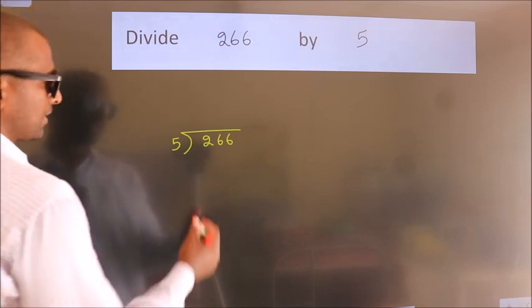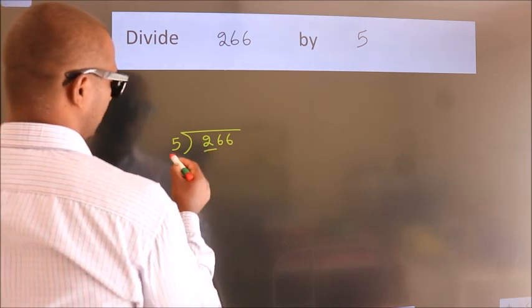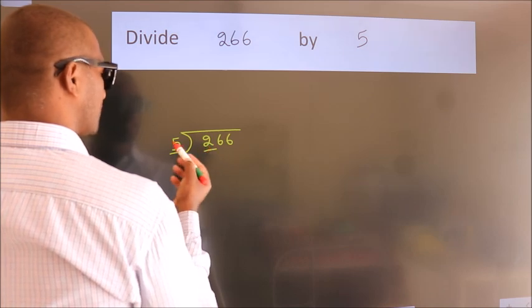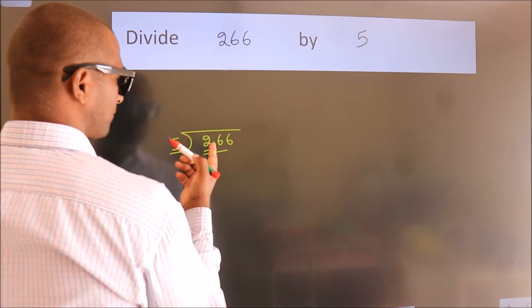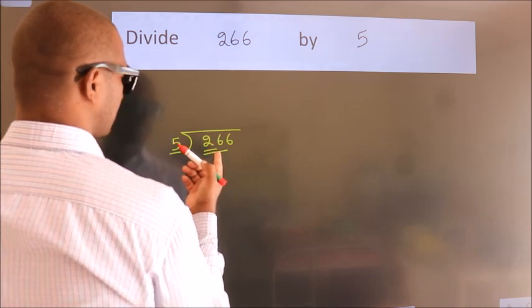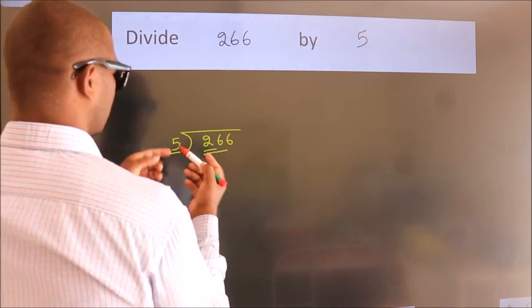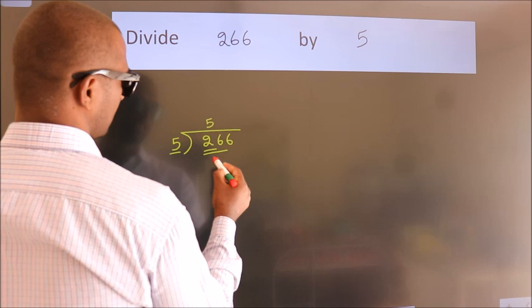Next, here we have 2, here 5. 2 is smaller than 5, so we should take 2 numbers: 26. A number close to 26 in the 5 times table is 5 fives, which equals 25.